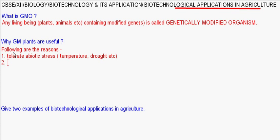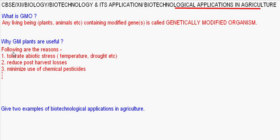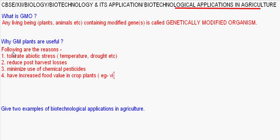Second, GM plants can reduce post-harvest losses. Third, they reduce or minimize the use of chemical pesticides. Fourth, they have increased food value in crop plants or other food products obtained from plants — for example, vitamin A-rich rice.